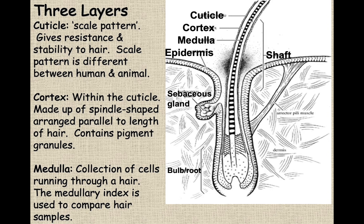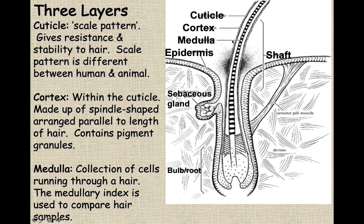The cortex is just below the cuticle. The cortex is where you find the pigments of the hair, and it contains a high percentage of the protein keratin — basically spindle-shaped lengths of proteins bundled together to make the strand of hair.